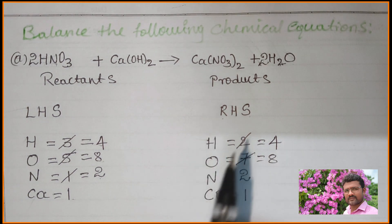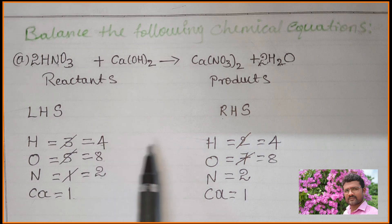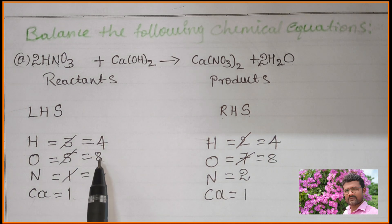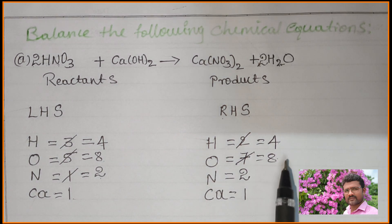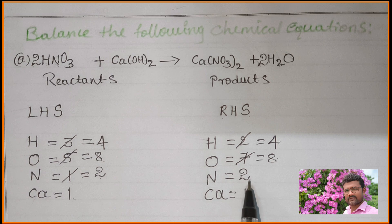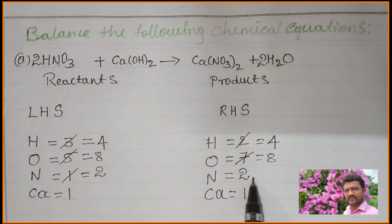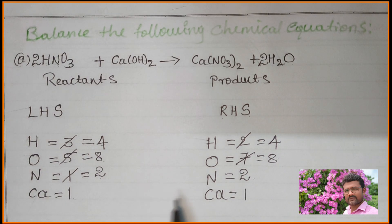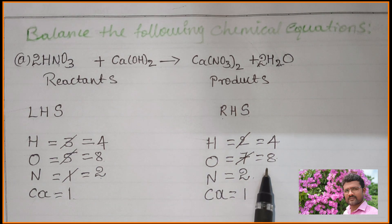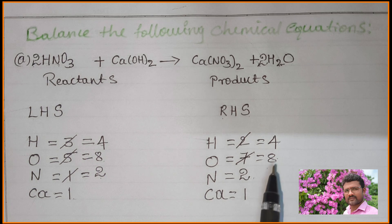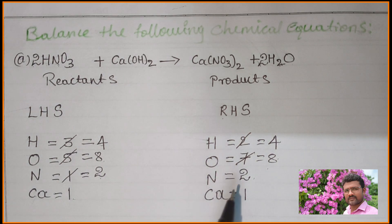Now final cross-check: LHS 4 hydrogen = RHS 4 hydrogen — balanced. LHS 8 oxygen = RHS 8 oxygen — balanced. LHS 2 nitrogen = RHS 2 nitrogen — balanced. LHS 1 calcium = RHS 1 calcium — balanced. LHS equals RHS for all elements. This is a balanced chemical equation.